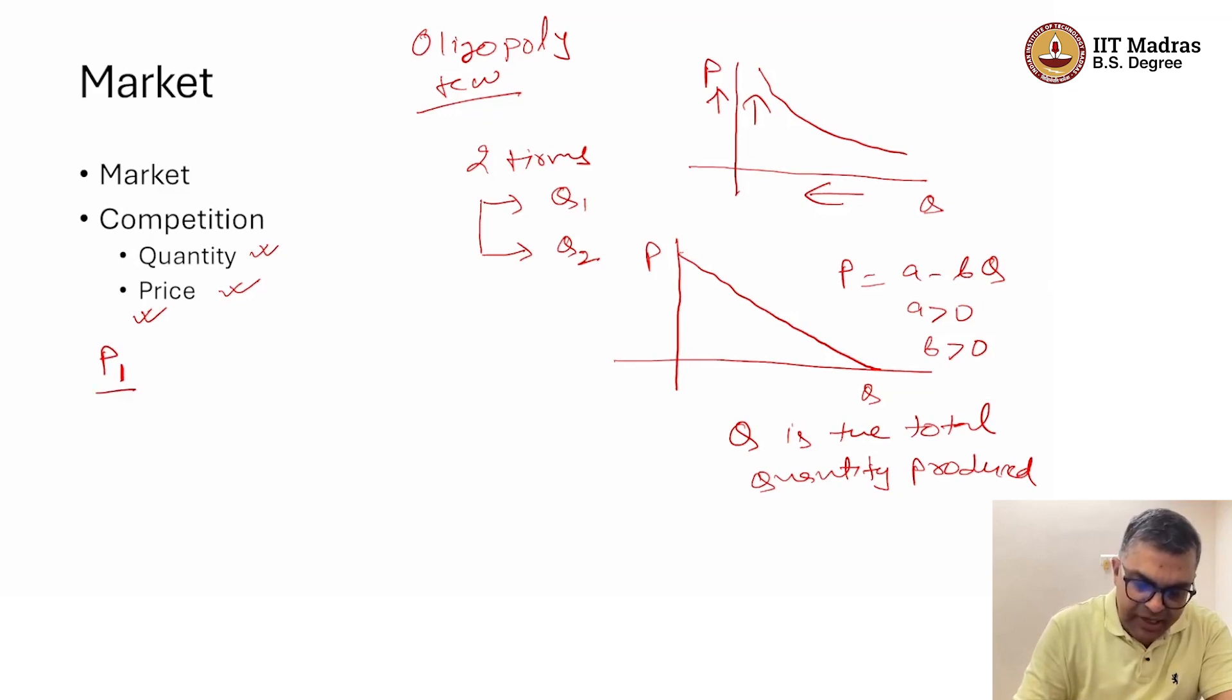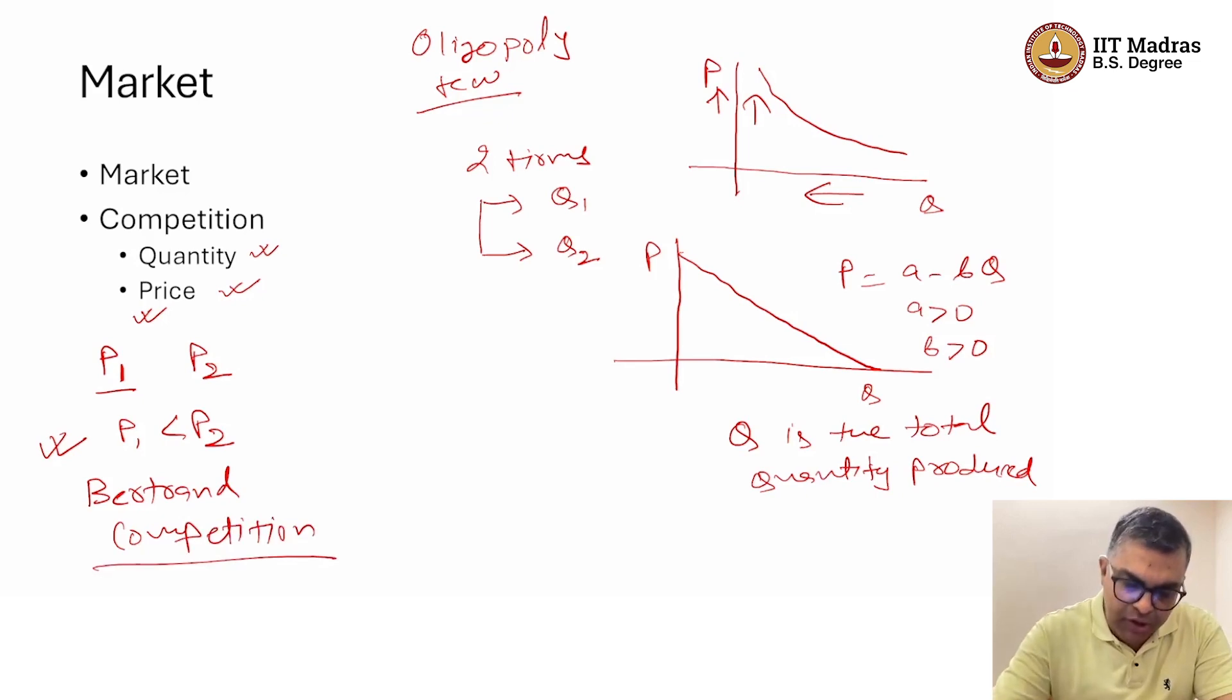One is trying to sell at P1, another at P2. But here life is very simple. If P1 is less than P2 and they are not different on any other dimension, then everyone will go to the firm selling the product at lower price. This is called Bertrand Competition.